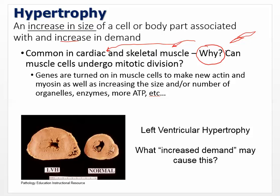Genes are turned on in muscle cells to make new actin and myosin — that's where the muscle pull comes from — which increases strength. You can have an increased number of actin and myosin filaments, and that causes the muscle to get larger. There's also an increase in size or number of organelles like the sarcoplasmic reticulum and enzymes. More activity means more enzymes, which can produce more ATP, and everything increases, making the cell larger.